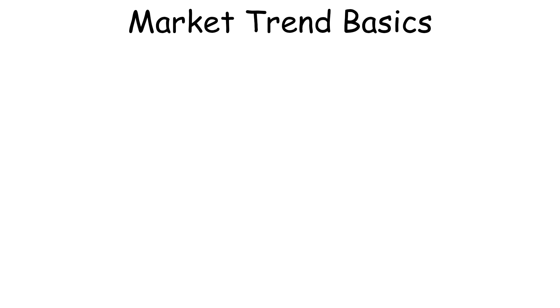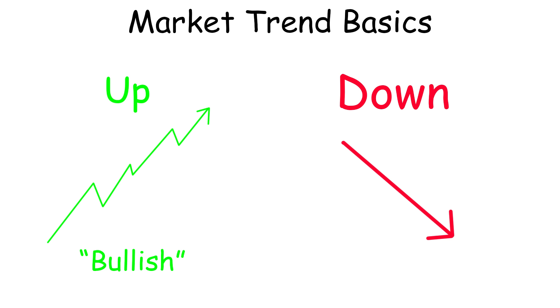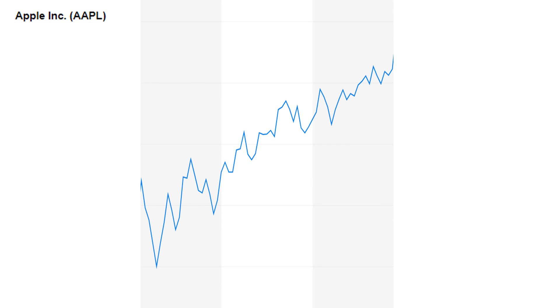The first thing you need to know about the stock market is the two directions a stock price can go, which is up or down. And if you think a stock is going up, we'd say that you're bullish, and if you think a stock is going down, we'd say that you're bearish.